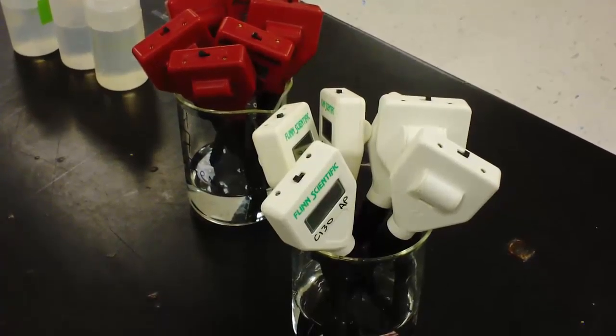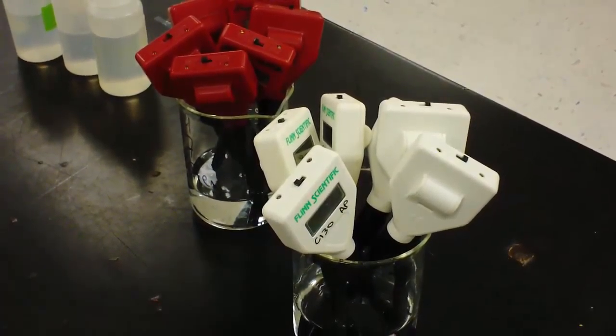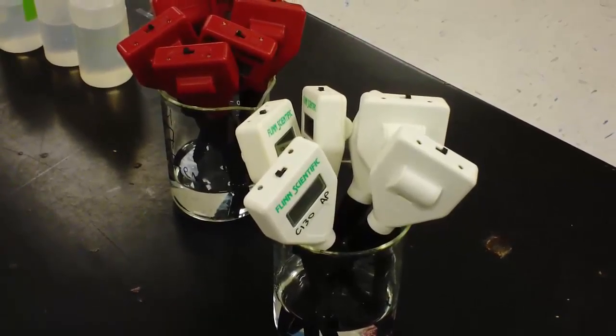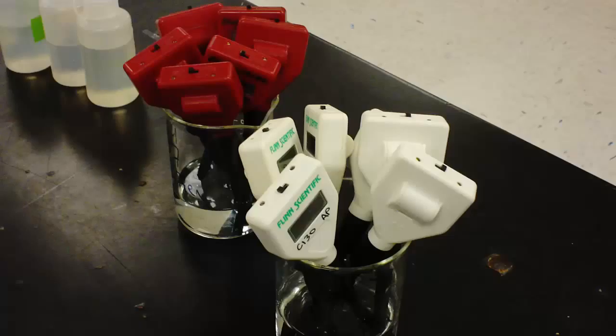When you're done, take it out, rinse it with distilled water, turn it off, and put it back in the beaker so it's ready either to be put away at the end of the day if you're fourth period.